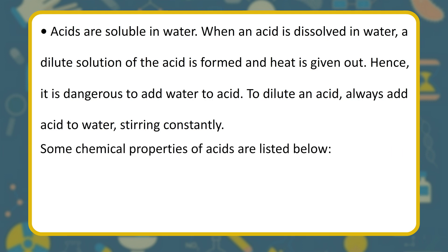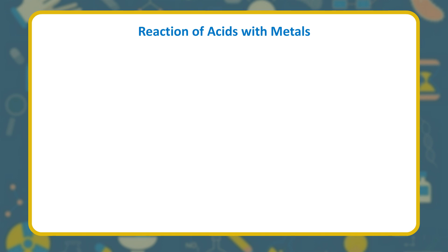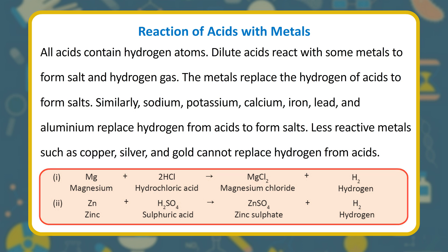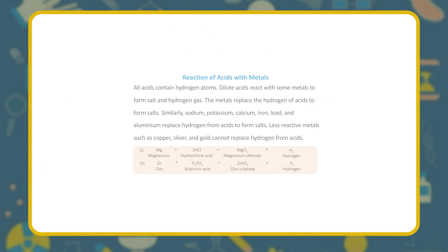Some chemical properties of acids — reaction of acids with metals: all acids contain hydrogen atoms. Dilute acids react with some metals to form salt and hydrogen gas. Metals such as sodium, potassium, calcium, iron, lead, and aluminum replace hydrogen from acids to form salts. Less reactive metals such as copper, silver, and gold cannot replace hydrogen from acids. For example: Mg + 2HCl → MgCl₂ + H₂; Zn + H₂SO₄ → ZnSO₄ + H₂.